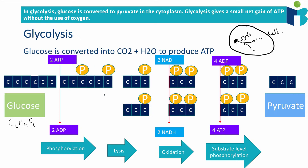After phosphorylation, this six-carbon molecule is then going to split in half — hence the word 'lysis' in glycolysis, because lysis means splitting. So this six-carbon molecule with two phosphate groups is going to split into two three-carbon molecules.